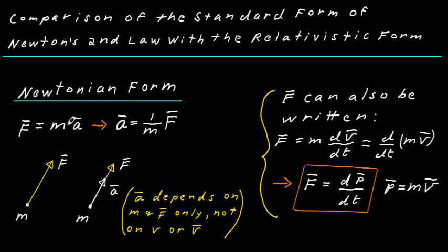You can take F equals ma and write it as F equals m times dv/dt, since a equals dv/dt. Since m is a constant, you can bring it inside the derivative to get d/dt of mv. But mv is just the momentum, so the equation is equivalent to F equals dp/dt.